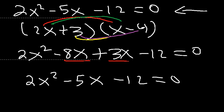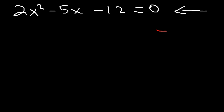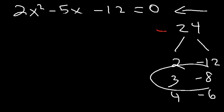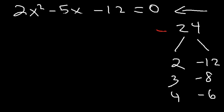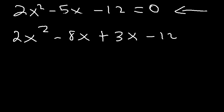But how can we actually factor this trinomial where the leading coefficient is not 1 using the standard method? First, multiply the leading coefficient by the constant term: 2 times negative 12 is negative 24. Ask yourself: what two numbers multiply to negative 24 but add to the middle coefficient of negative 5? Looking at the options — 3 and negative 8 — notice that 3 plus negative 8 is negative 5. So we'll replace negative 5x with negative 8x and positive 3x.